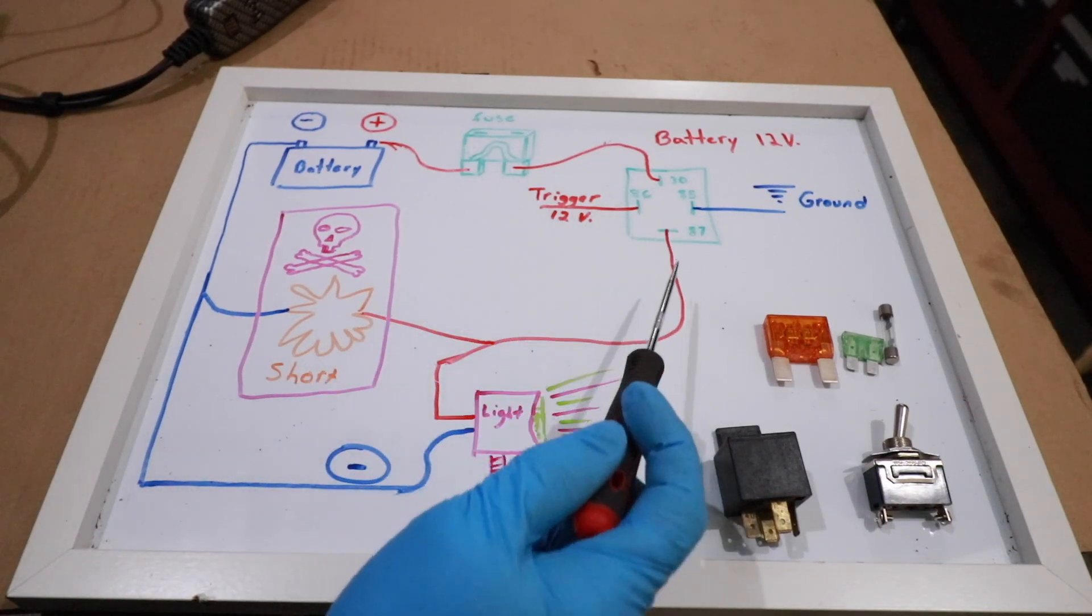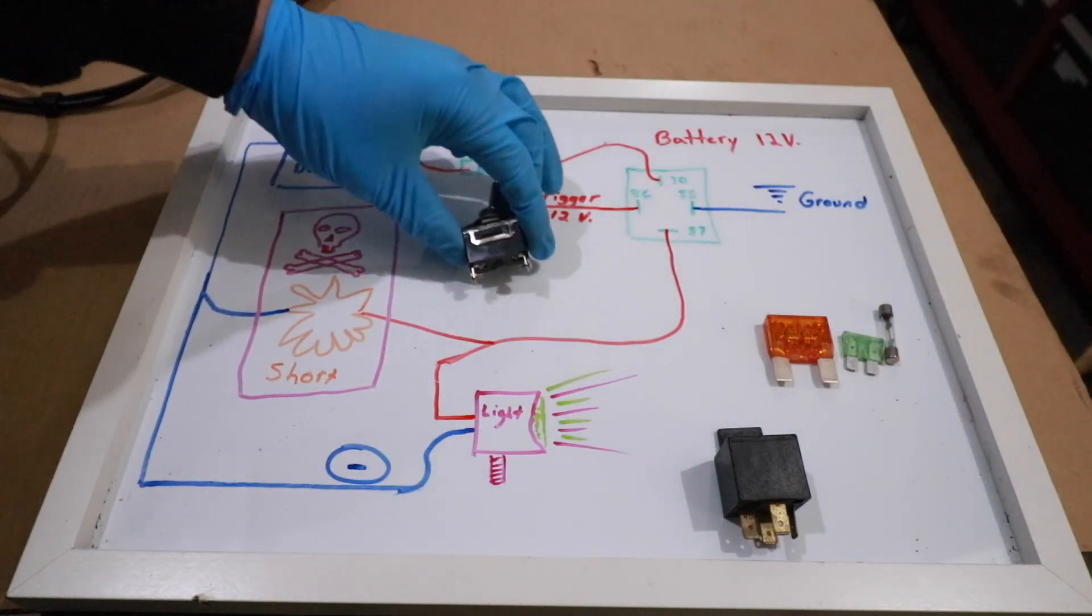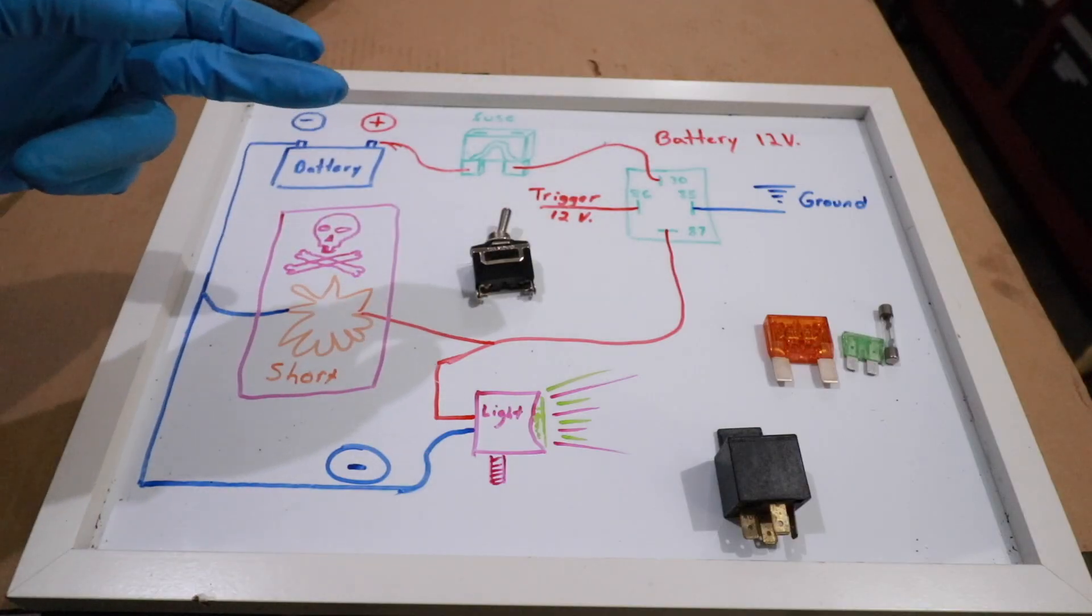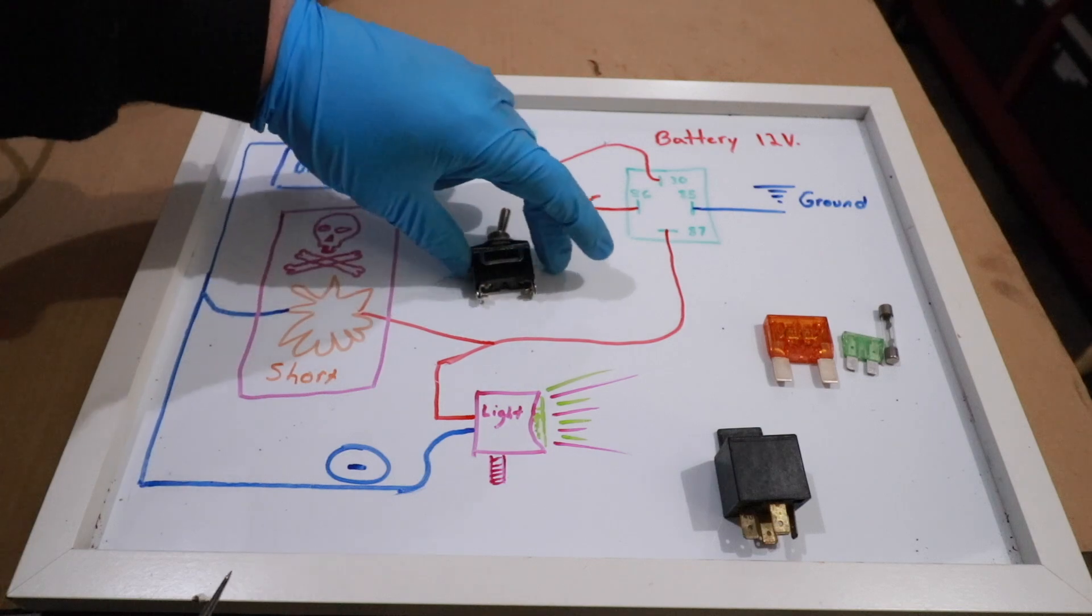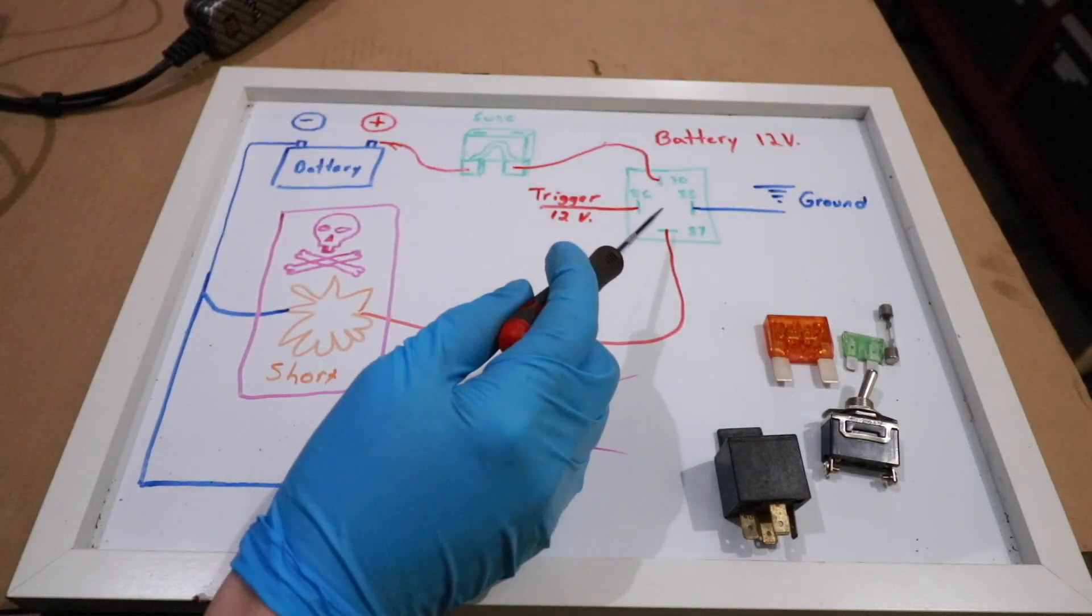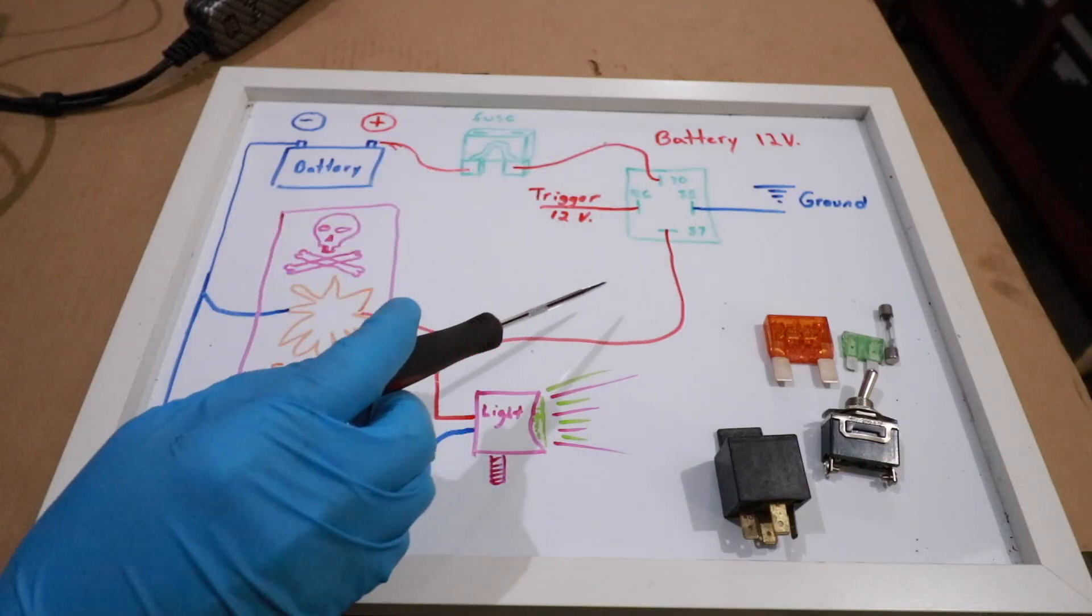After the fuse it's pretty common that you may have a relay. A relay is similar to a switch. A relay basically is a switch, but as opposed to a toggle switch which can only handle so much current, a relay allows you to switch over large current loads safely.